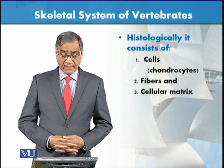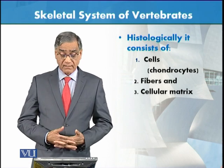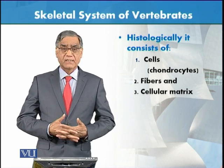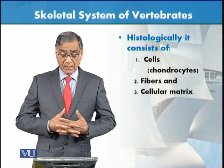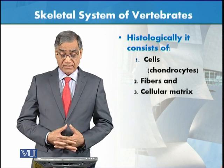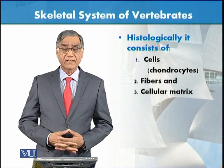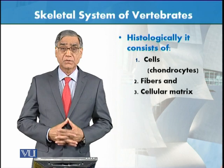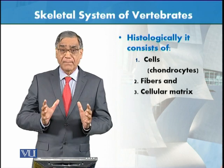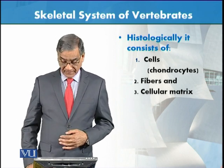Histologically, cartilage consists of cells — these cells are called chondrocytes — along with fibers and a cellular matrix. These three things make up cartilage.